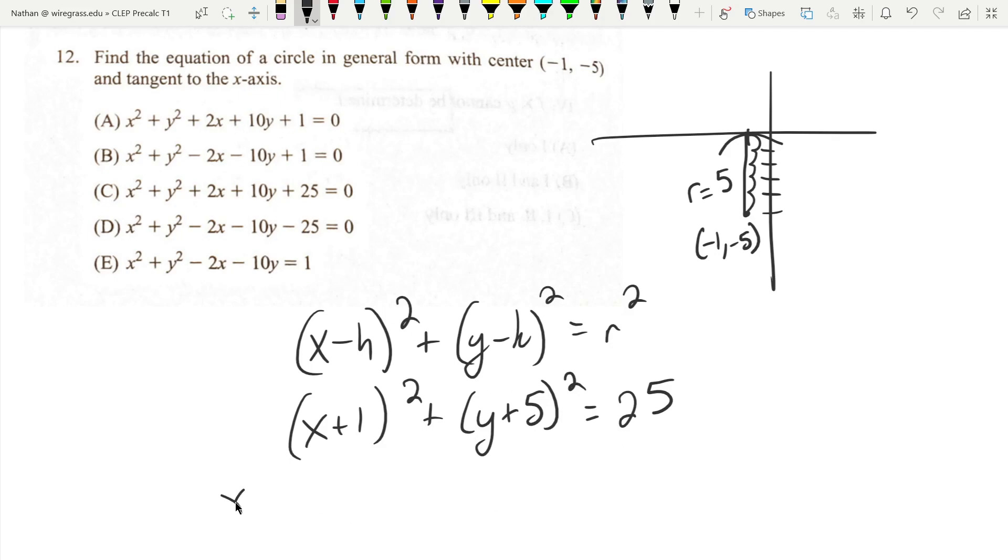So let's just multiply it out. We're going to get x squared plus 2x plus one, y squared plus 10y plus 25 equals 25. The 25s cancel from both sides, so we just get equals zero.